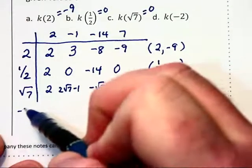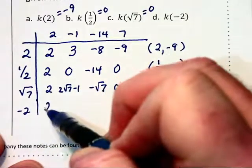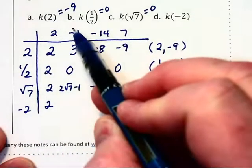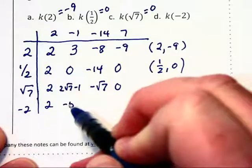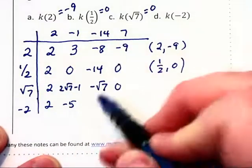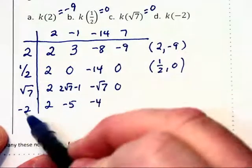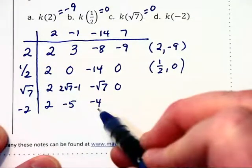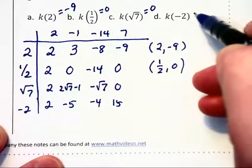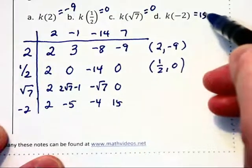Finally, substituting in negative 2, we bring down our first 2. Negative 2 times that 2 is negative 4 plus that negative 1 up there makes negative 5. Negative 2 times negative 5 is 10 minus that 14 up top is negative 4. Negative 2 times negative 4 is 8 plus that 7 is 15. And k of 2 is equal to 15.